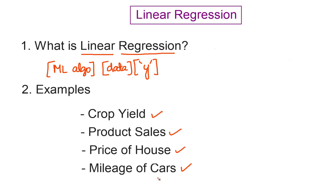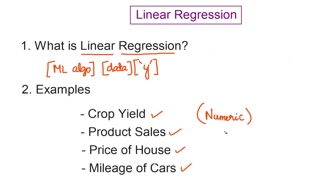What is the common thread amongst these examples — what type of variables can linear regression predict? If you look at these four variables, all of them are numeric variables. The main condition for using linear regression is that it must be a numeric variable. Linear regression cannot predict any categorical values.